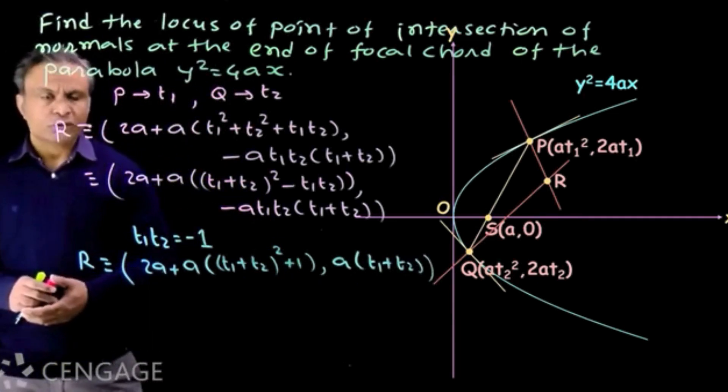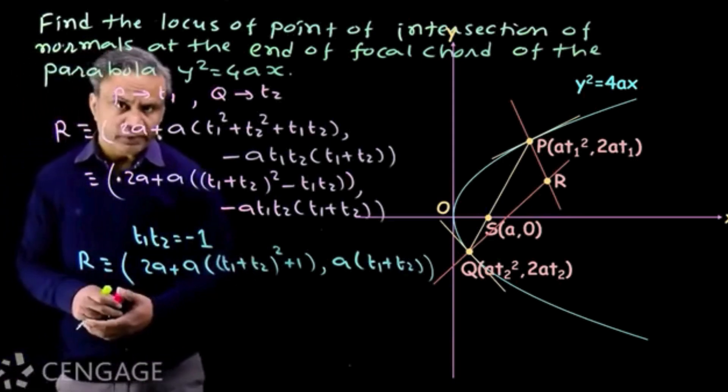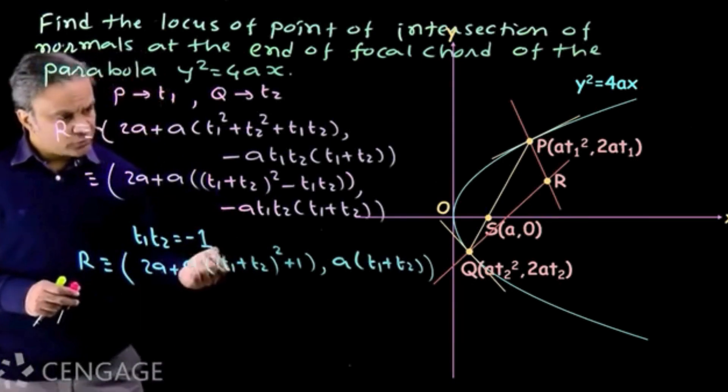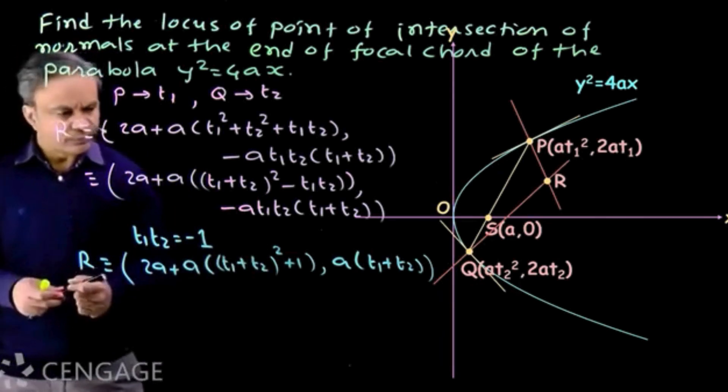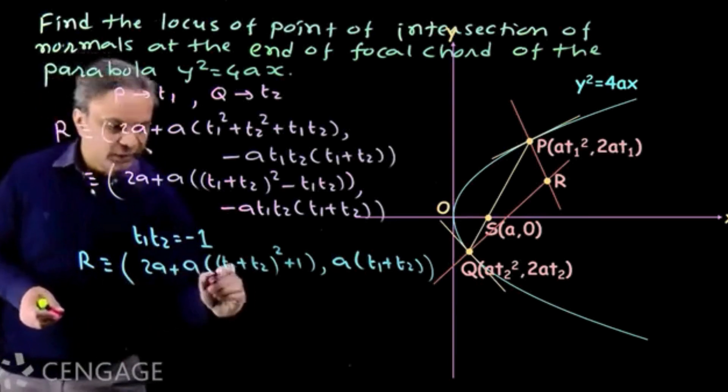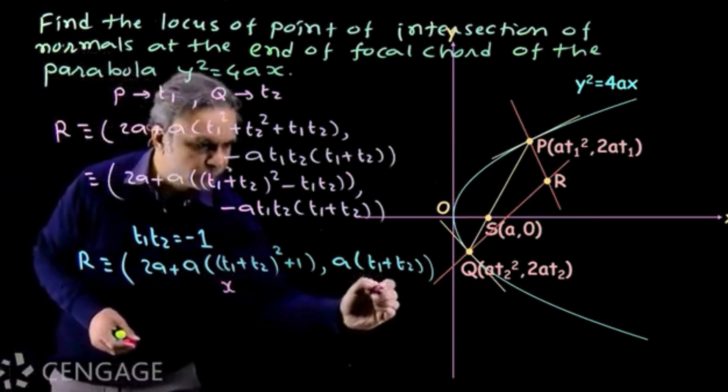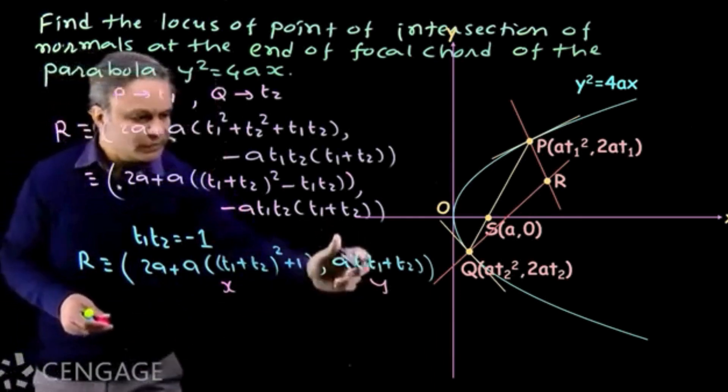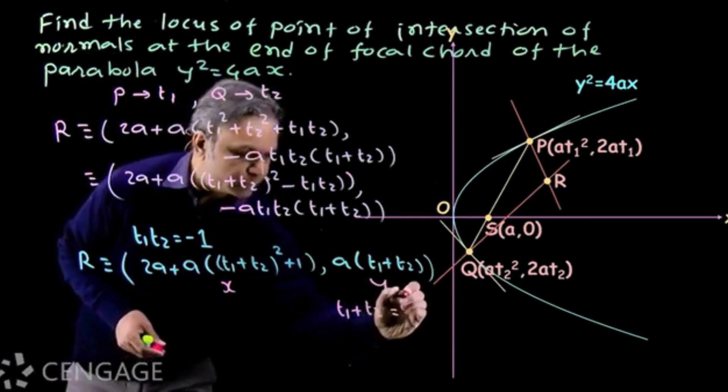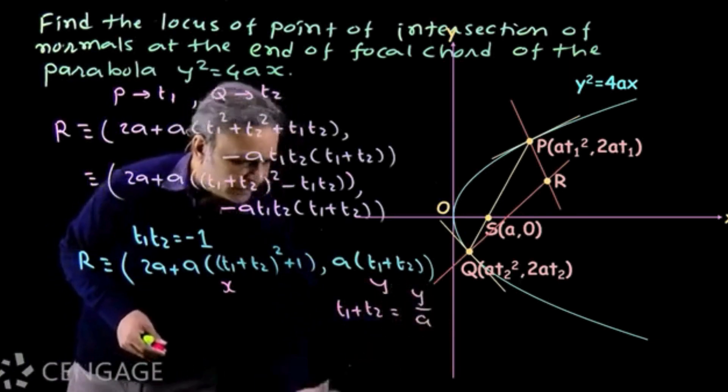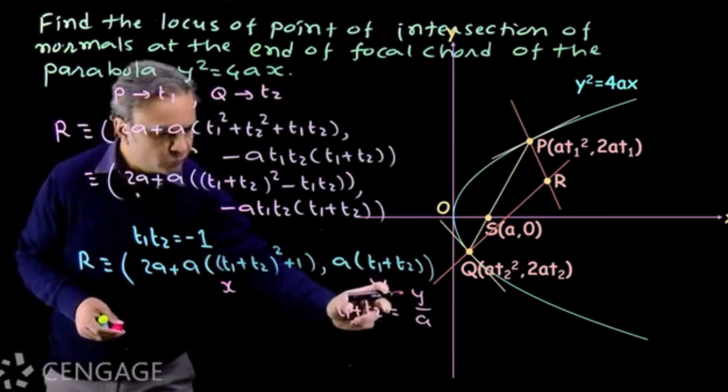Now point R is variable because t1 and t2 are variables. So to get the equation of locus of point R we must eliminate variables t1 and t2, and it's simple. Suppose coordinates of point R are x comma y. From this comparison we get t1 plus t2 is equal to y upon a.